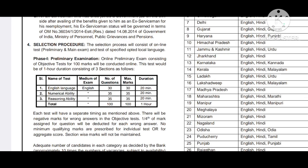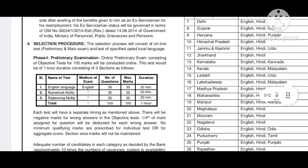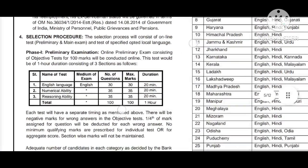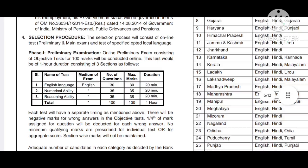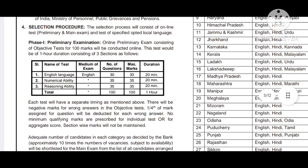The selection process will consist of an online test — preliminary and main examination. We have Phase 1, the preliminary examination, which is 100 marks and is computer-based, covering multiple subjects.